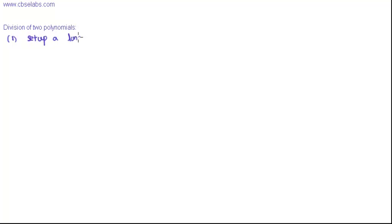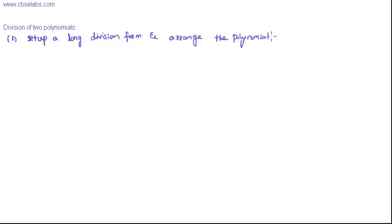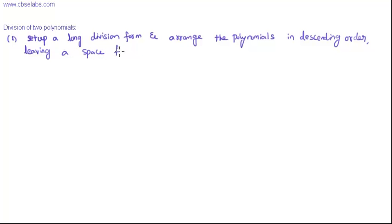The first step is: set up a long division form. Arrange the polynomials in descending order, leaving a space for the missing terms.